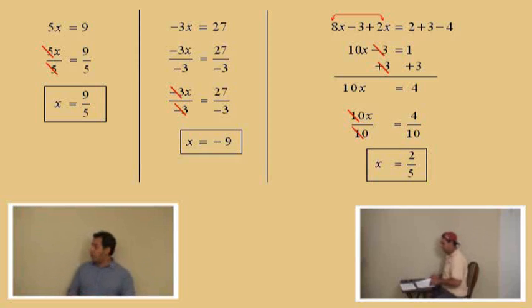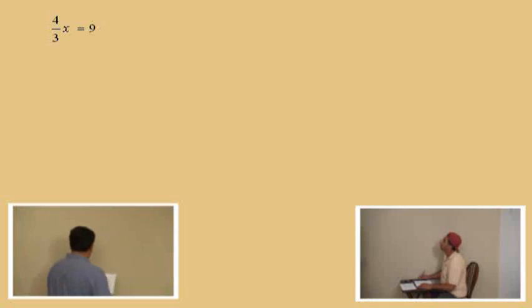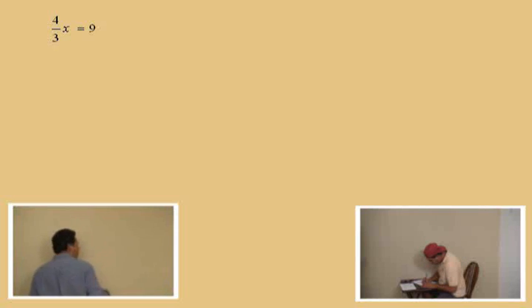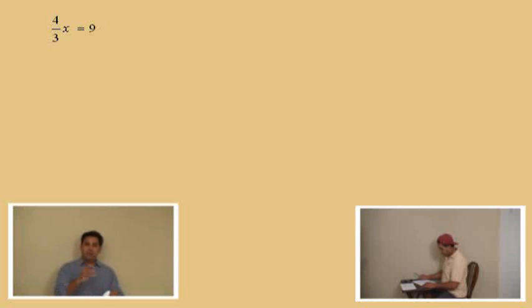Moving on — we're going to look at some problems that have fractions in them. We'll go to this problem: four thirds x equals nine. Now four thirds x is the same as four x over three, but I'm writing it as four thirds x so we keep the number in front of the x. It's a little easier to handle in this format.